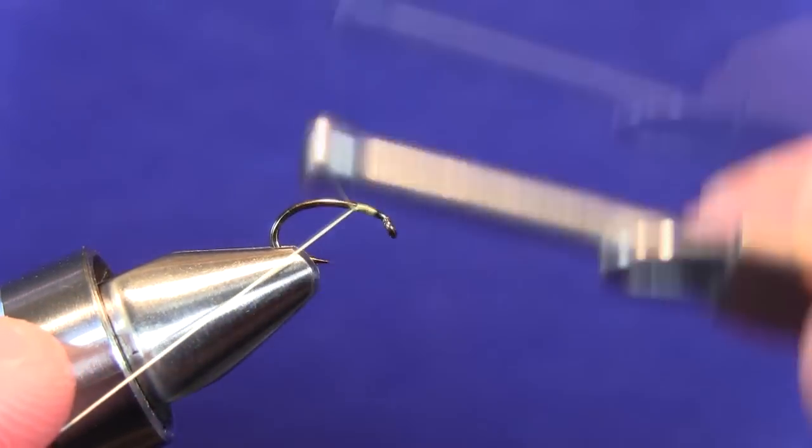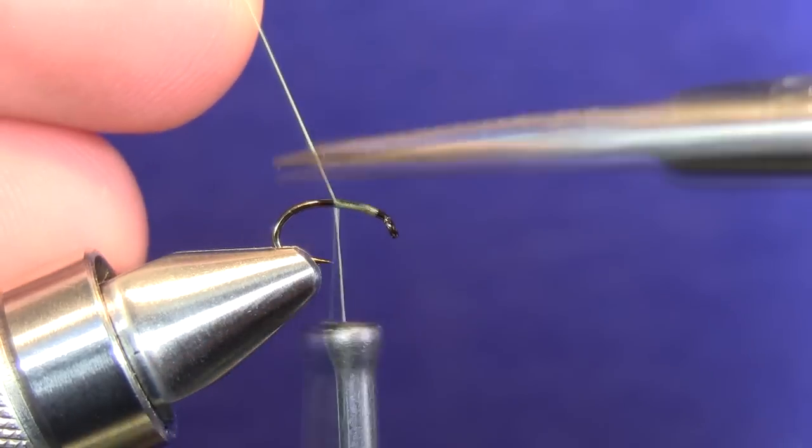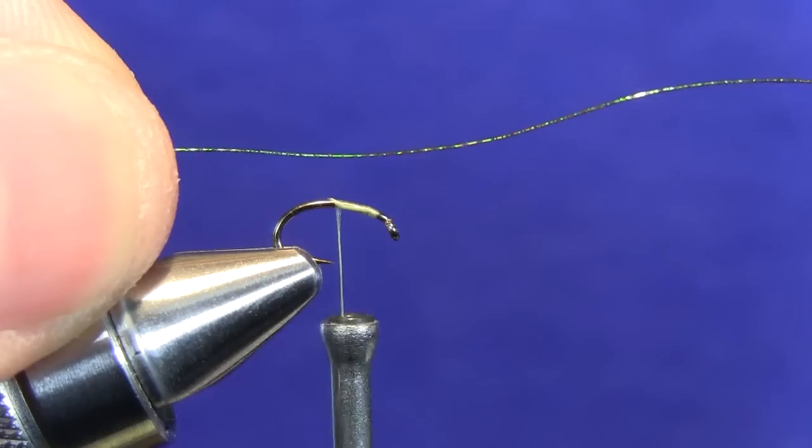To get started, we're going to take our watery olive thread and wrap that along the shank to about the midway point. We'll take our scissors and just clip out the ends.